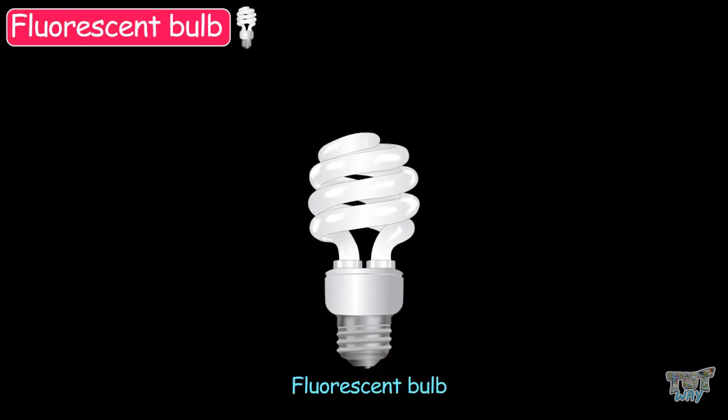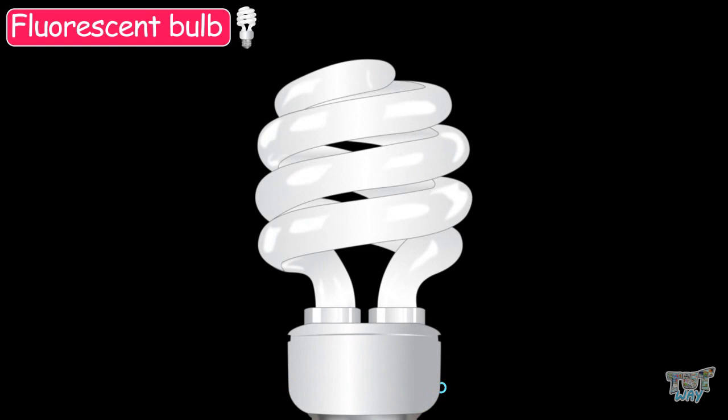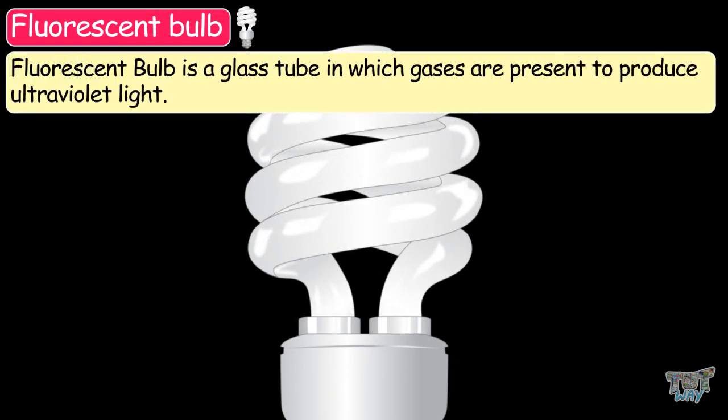Let's learn about the second type of bulb, the fluorescent bulb. This bulb is a glass tube in which gas is present to produce ultraviolet light.